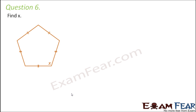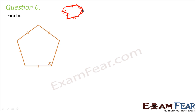Question number 6. Find x. Now here nothing is given, but do you still think we will be able to find x? Yes, because this symbol shows that the length of all the sides are equal. Wherever in a diagram you find these kinds of symbols — if a side has one tick mark that means it equals another side with one tick mark, and so on. That's the significance of this symbol. So here it says that all the sides are equal.